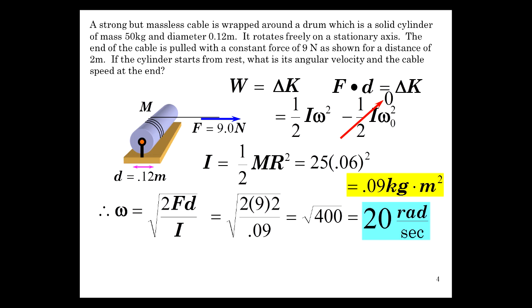The speed at the end of the cable itself, well, the speed is equal to R omega. So the radius times the angular velocity gives you the speed. So that's the speed of the cable. And that would give us 0.06 times 20, 1.2 meters per second.